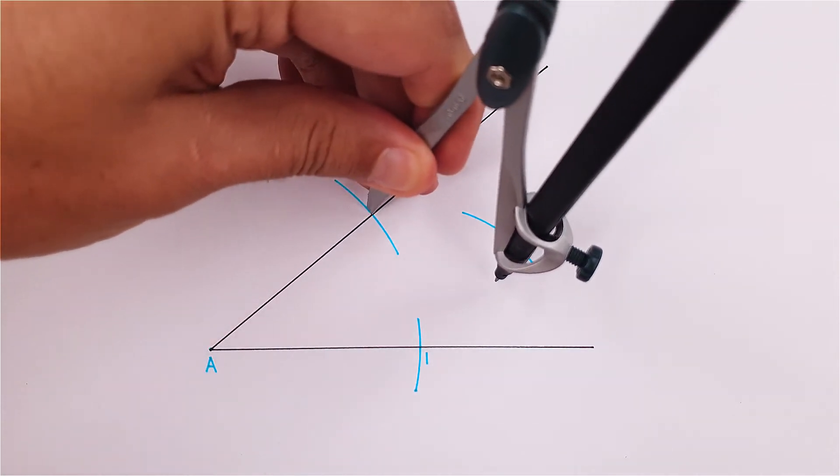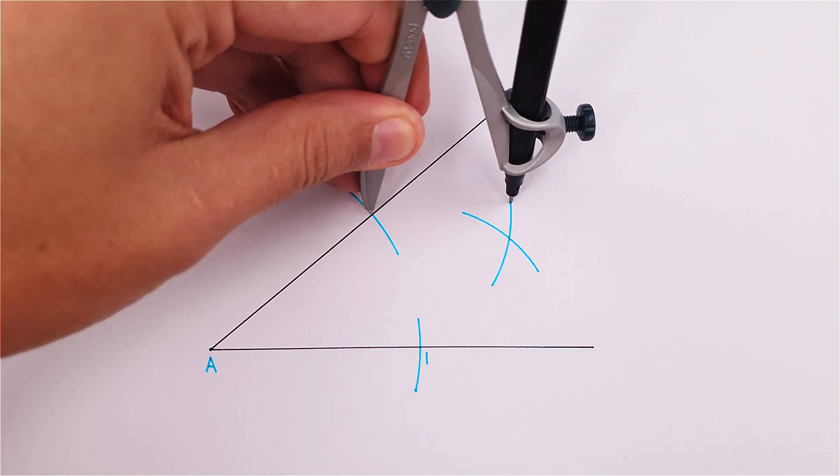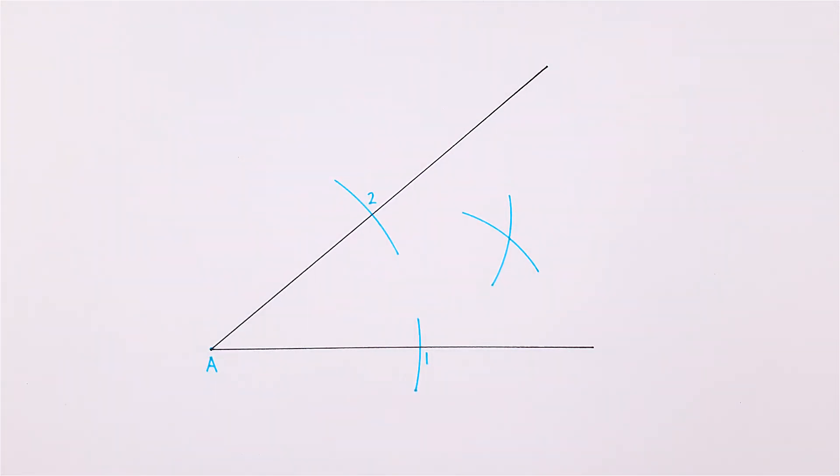Using this same measurement, place your compass on point 2 and draw another arc that will intersect the previous arc as seen in the video.